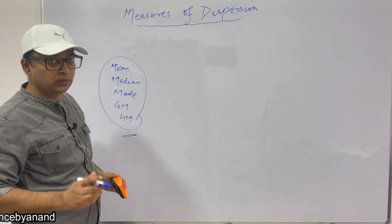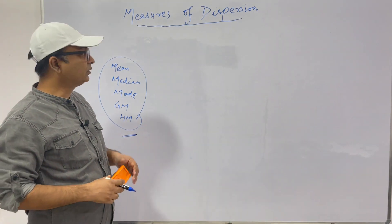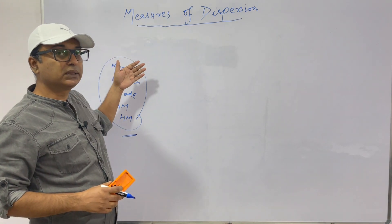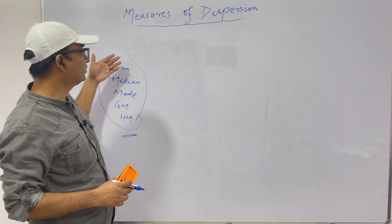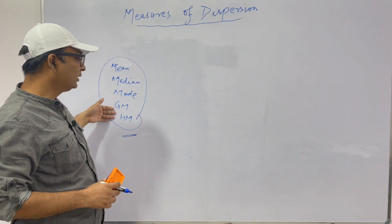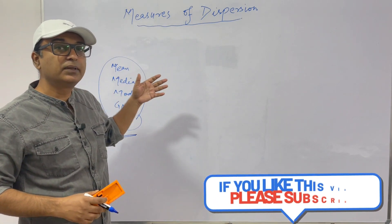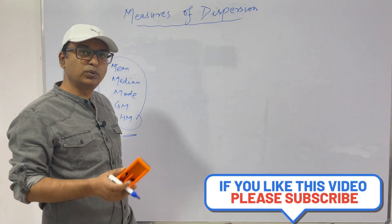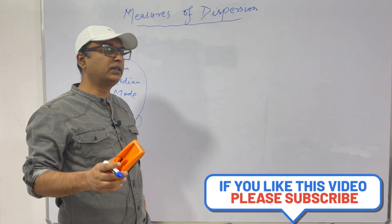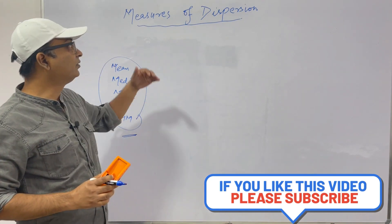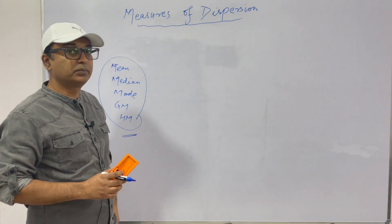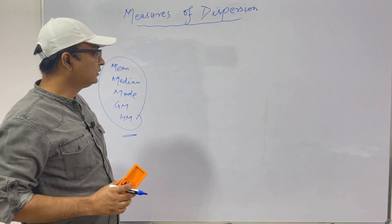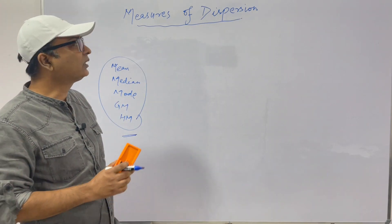You can revise from your book or go to my earlier videos where I have discussed measures of central tendency — mean, median, mode, geometric mean, and harmonic mean — and all methods of computing them. I advise you to go through those videos and understand them well before starting with measures of dispersion.